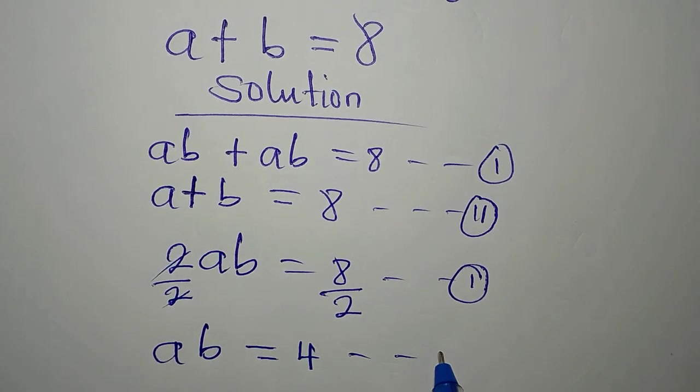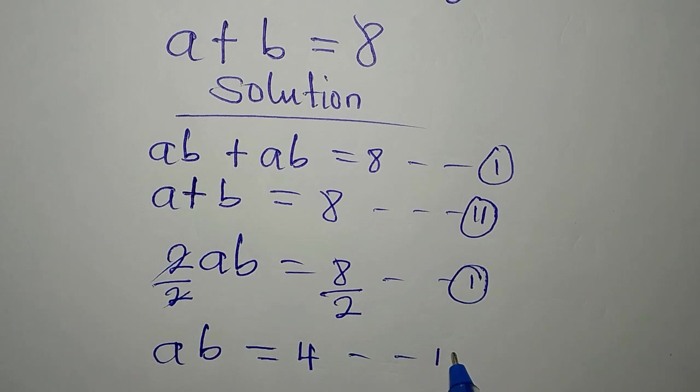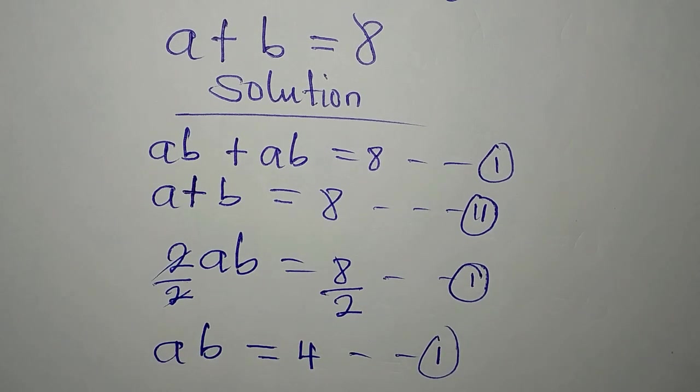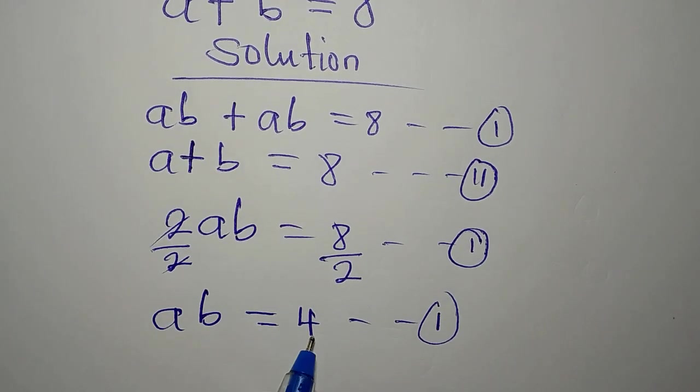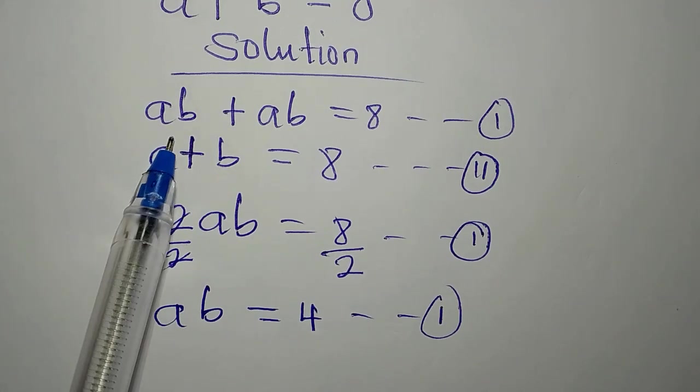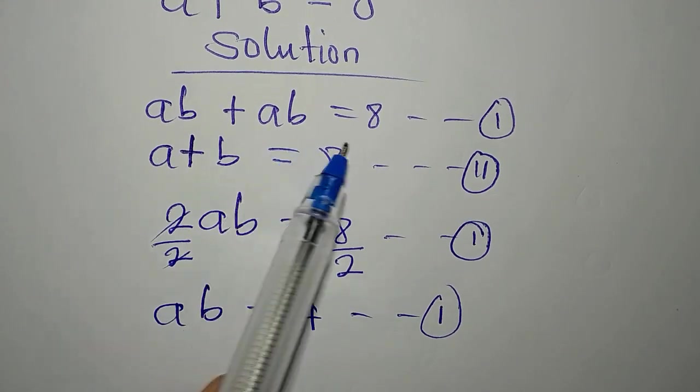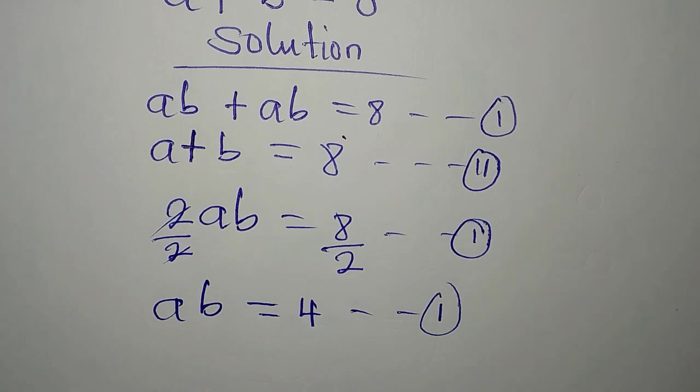Now I have AB to be equal to 4. Let's still call this our equation 1. And mind you, what we have here, AB equals 4, is the same thing as AB plus AB equals 8.